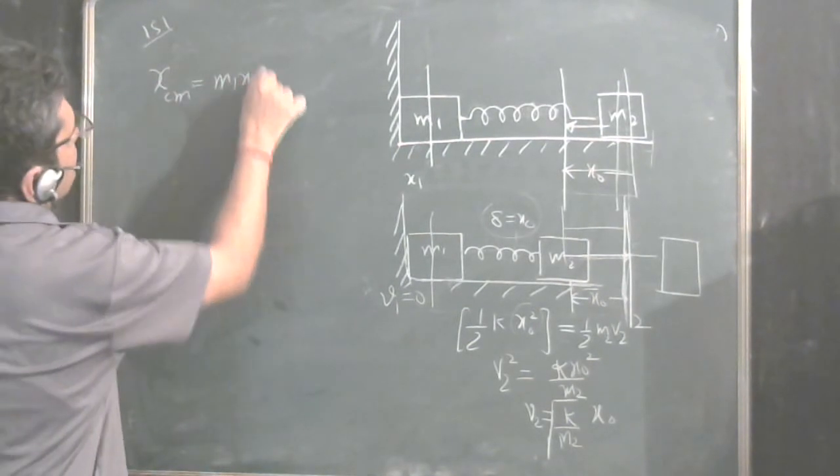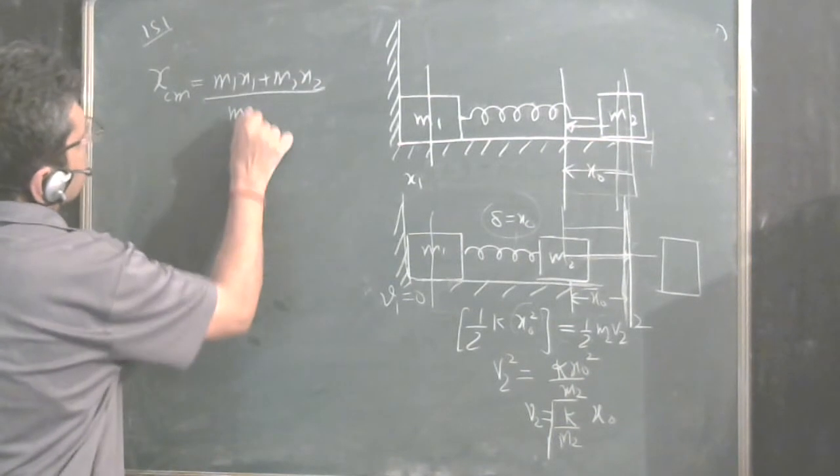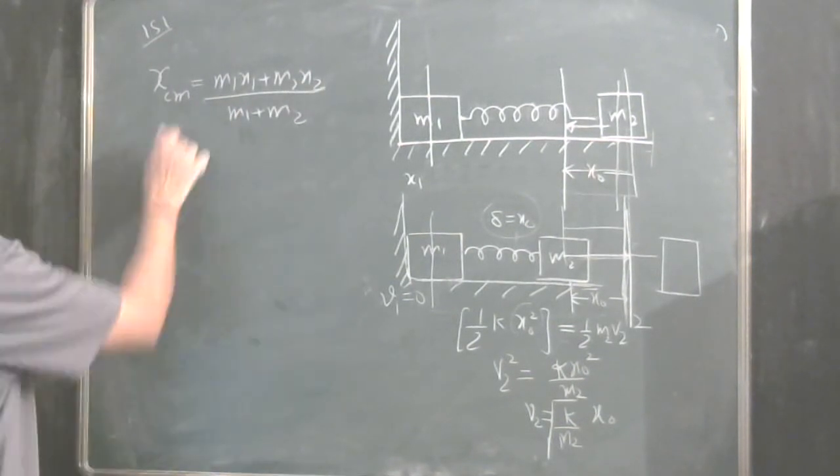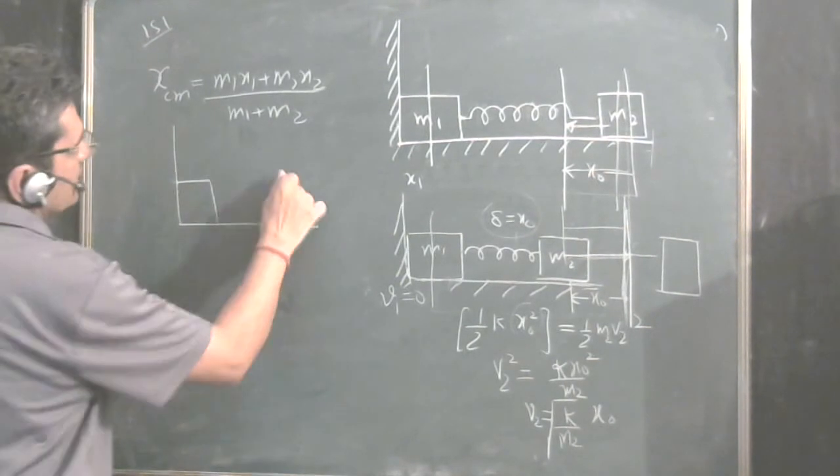The center of mass xcm is equal to M1 x1 plus M2 x2 upon M1 plus M2. The standard formula for center of mass, I will just show you how it has come.